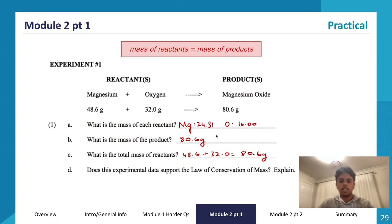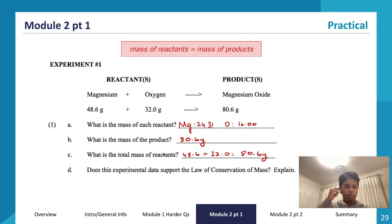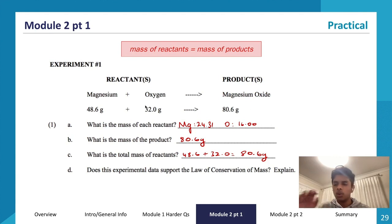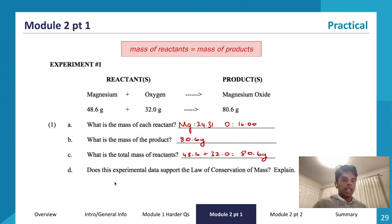Magnesium is 24.31, oxygen is 16, the mass of the product is 80.6 grams, and the total mass of reactants is 48.6 plus 32.0, equalling 80.6 grams. To answer whether the experimental data supports the law of conservation of mass: the law of conservation of mass states that matter can neither be created nor destroyed, so the mass of reactants must equal the mass of products. The mass of reactants equals 80.6 grams and the mass of products also equals 80.6 grams, so yes, the experimental data supports the law of conservation of mass as no mass is lost or gained.